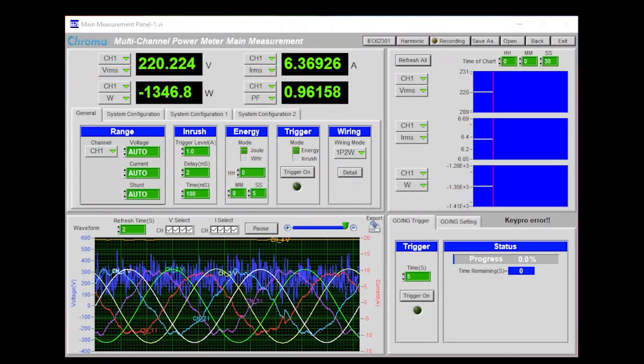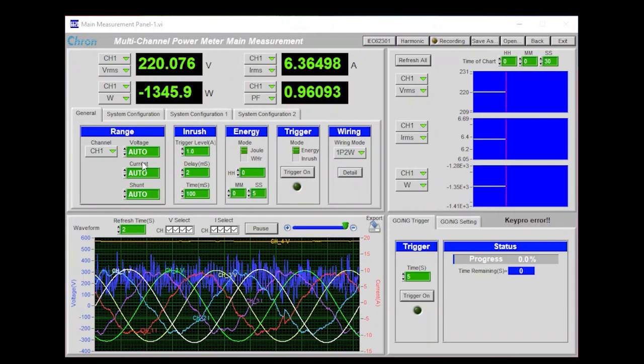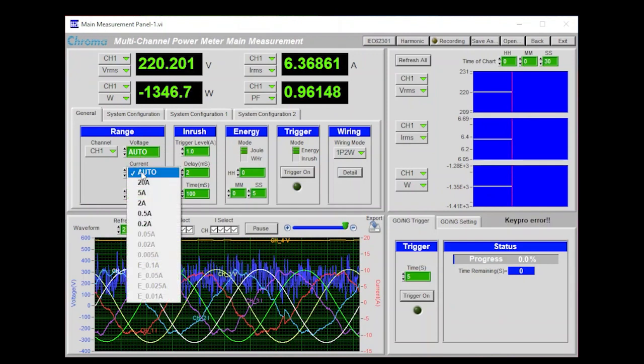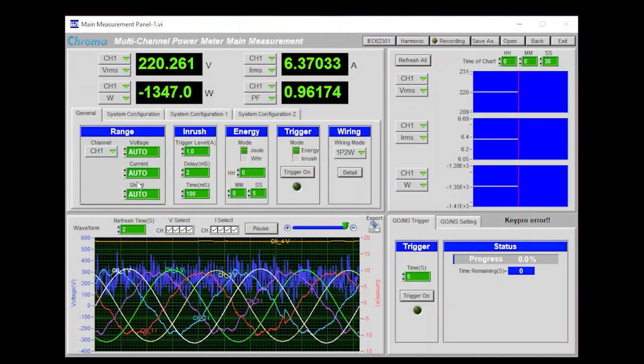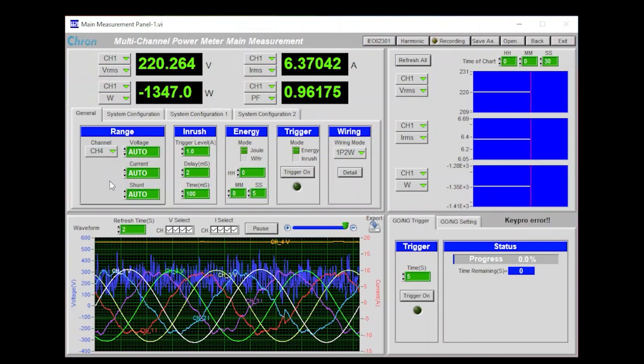We also have the General tab where we can change the settings of the power meter. Here, we can change the voltage range, the current range, and the shunt current range for the specified channel.